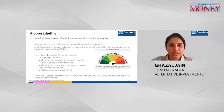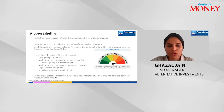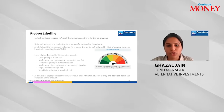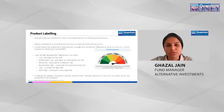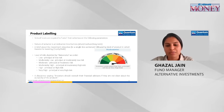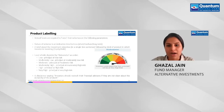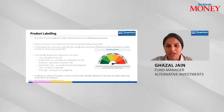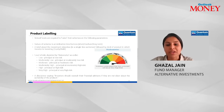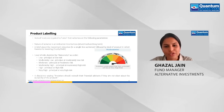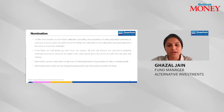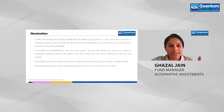SEBI has implemented product labeling tools investors should look out for. The riskometer is one such tool: each fund must mark where it stands in terms of risk. Most equity funds would be high or very high risk, while liquid funds would be low to low-to-moderate risk. This is a good way to judge what kind of risk-return potential you're buying into when you invest in a mutual fund.